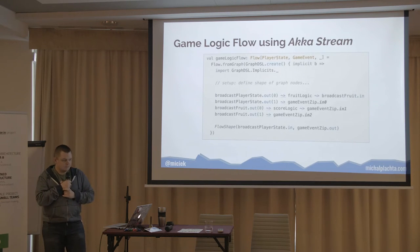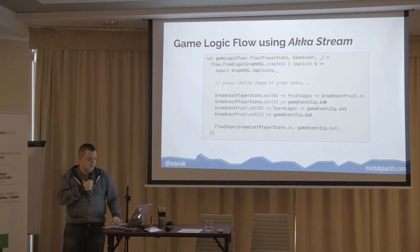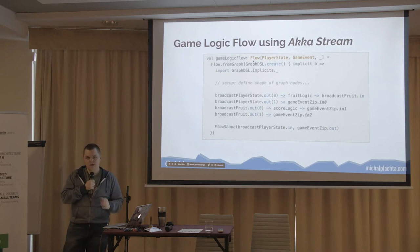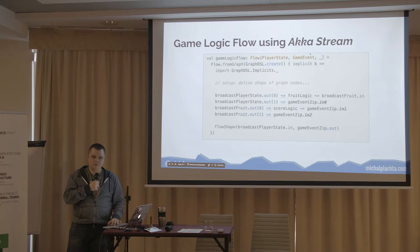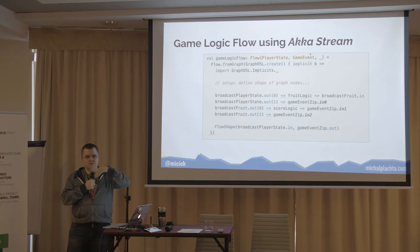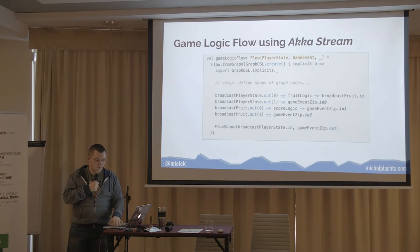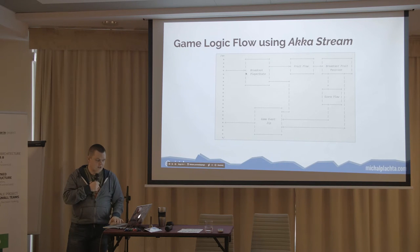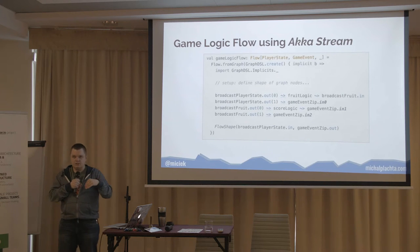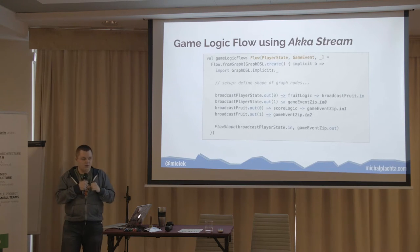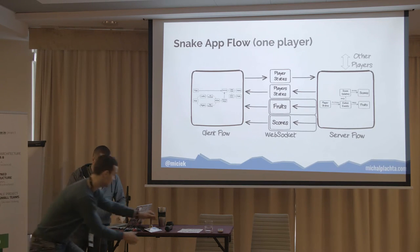The implementation returns a Flow type again — from player state to game event. Player state comes in (my position and name), and we get a game event back. We have this very complicated graph, but really it's still one in, one out — we just wrapped it. The whole complicated advanced graph is wrapped into a simple one called game logic flow, which is just one in, one out.